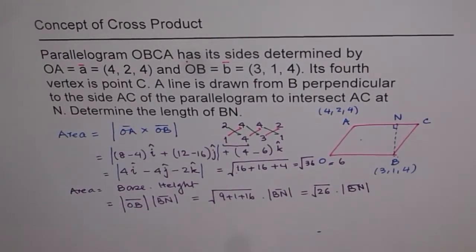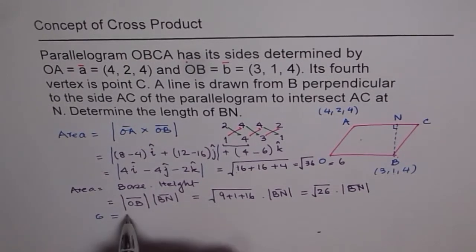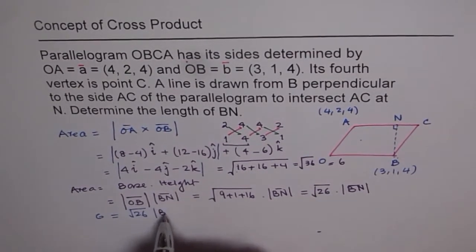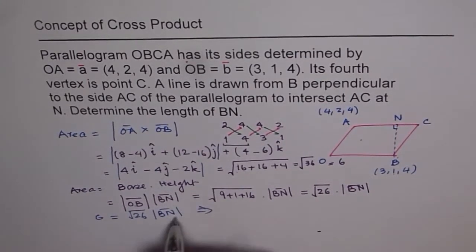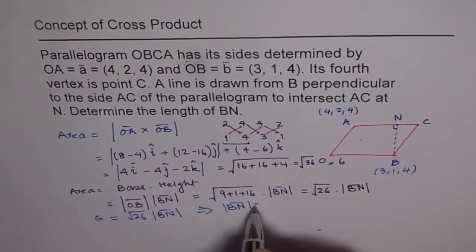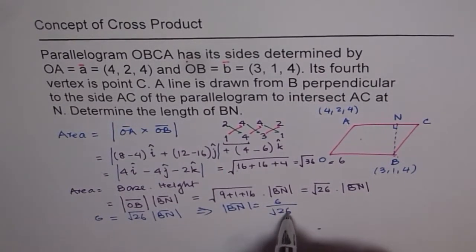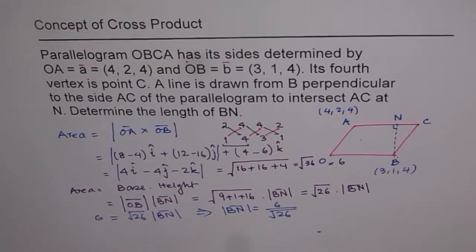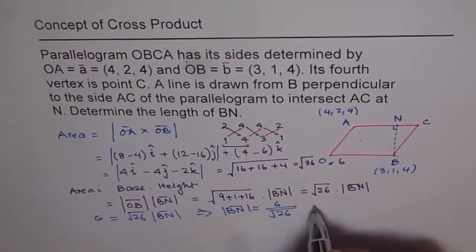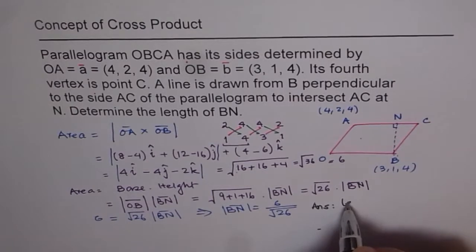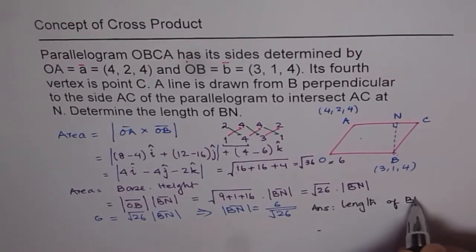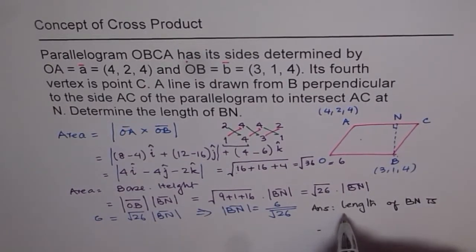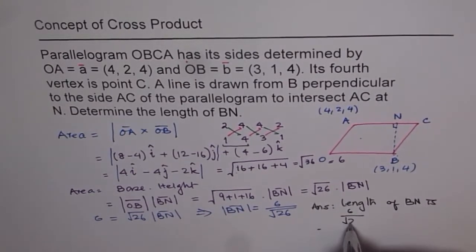So when we equate them, what do we get? What we get is 6 is equal to, so area is equal. So 6 is equal to square root of 26 times magnitude of BN. So from here, what is BN equals to? So the magnitude of BN is equal to 6 over square root of 26. So that is the answer, which we get for this particular question. 6 over square root of 26. Now we can write down our answer, which is length of BN is 6 over square root of 26.